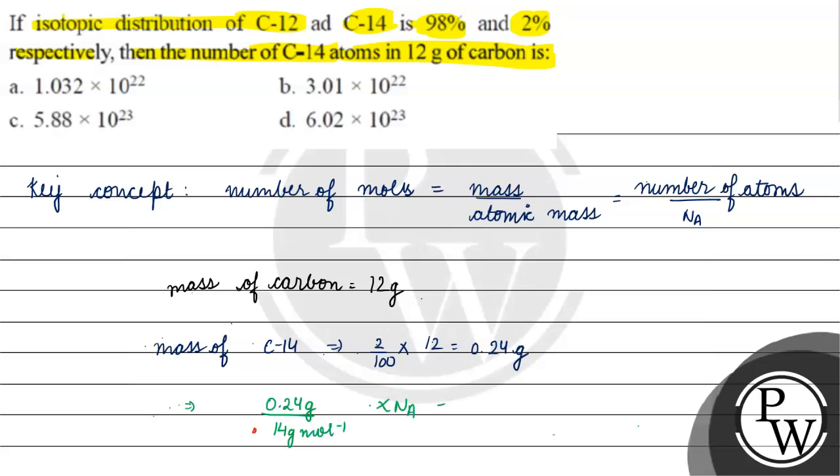Avogadro's number, which will give us the number of C-14 atoms in 12 grams of carbon.